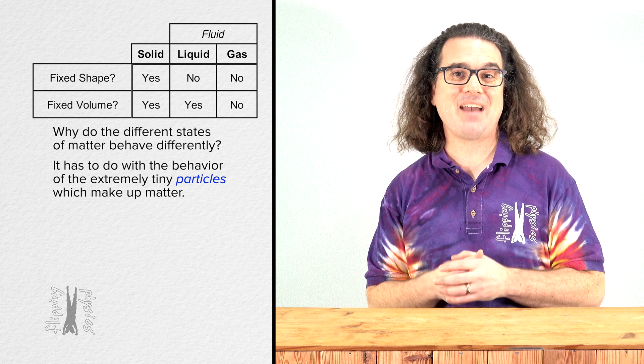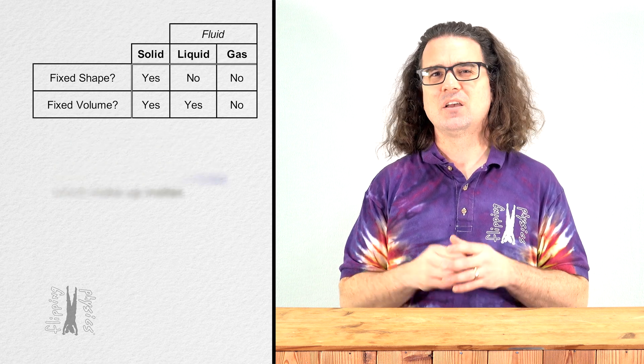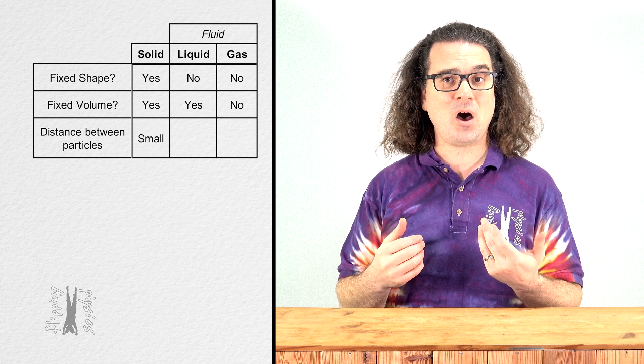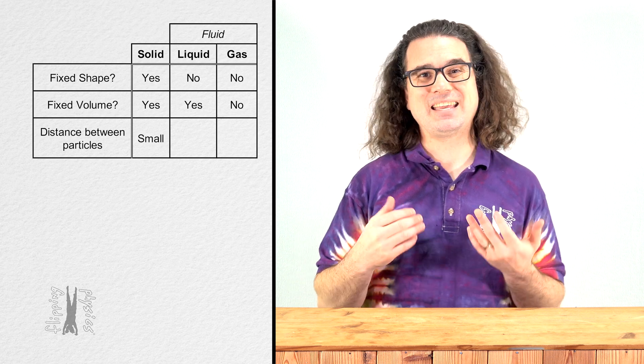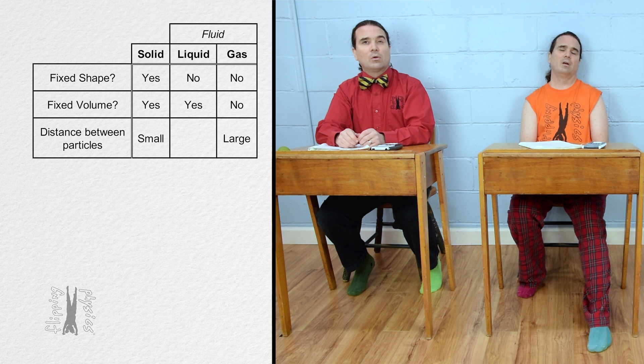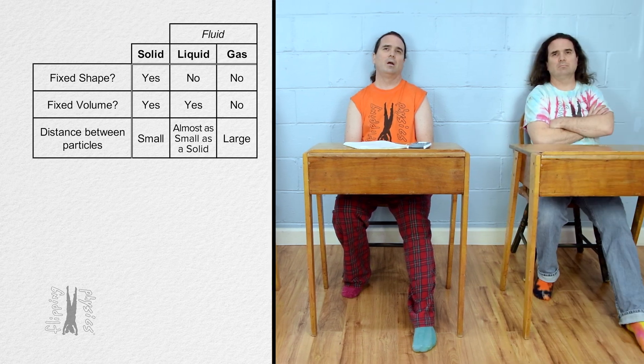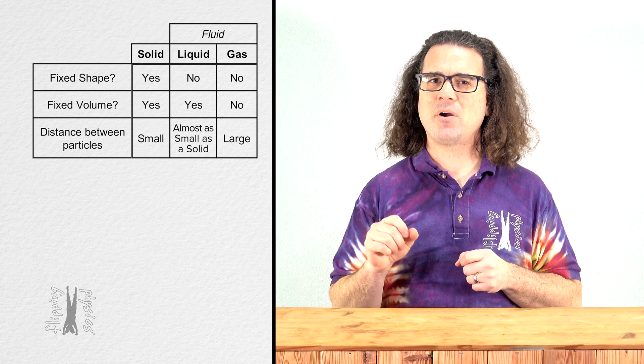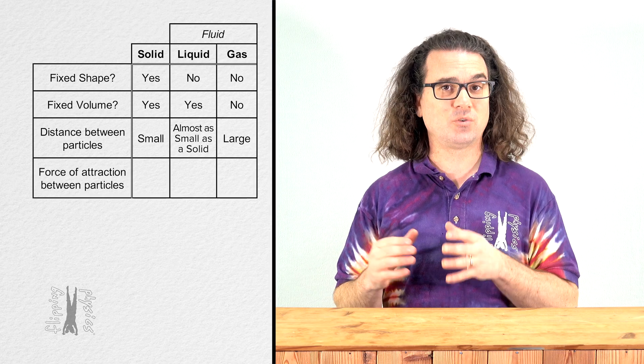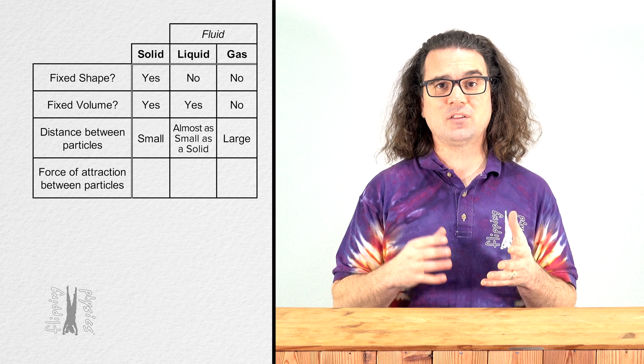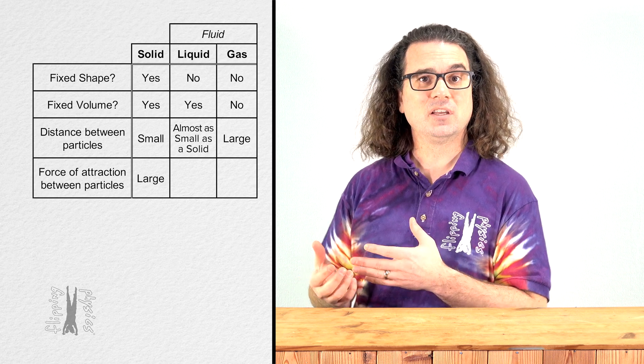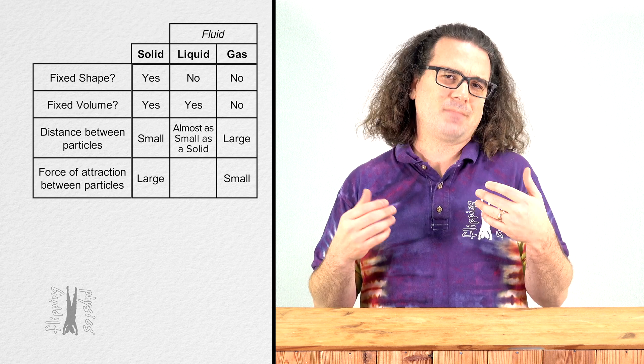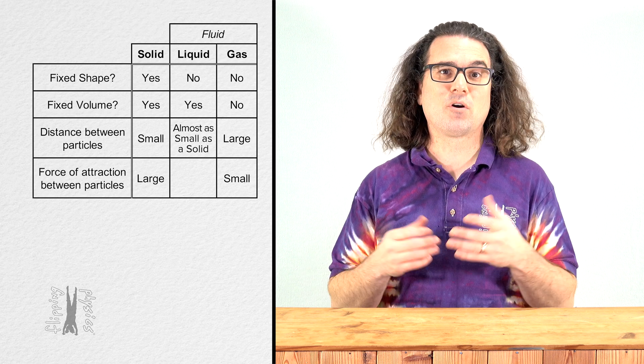Different states of matter have tiny particles which behave in different ways. For example, the distance between particles in a solid is small, the distance between particles in a gas is large, and the distance between particles in a liquid is typically almost as small as in a solid, H2O being an exception. And the tiny particles which make up matter are attracted to one another. In a solid, the force of attraction is large, in a gas, the force of attraction is small, and in a liquid, the force of attraction is, again, somewhere in between or medium.